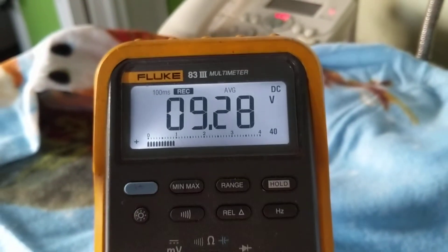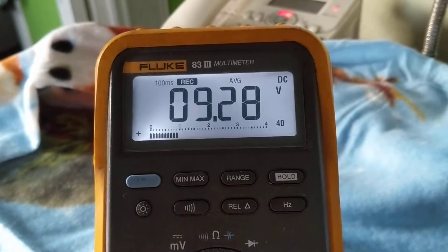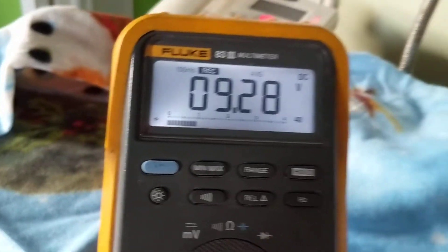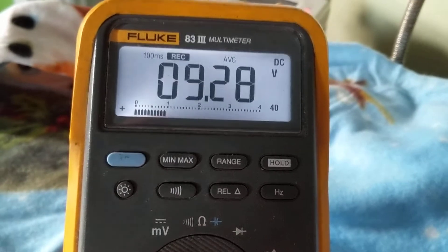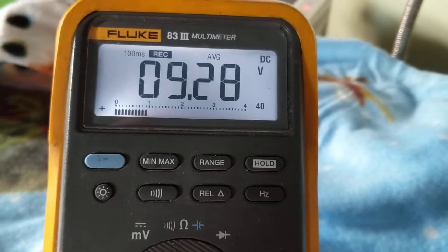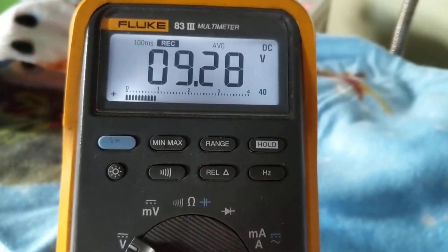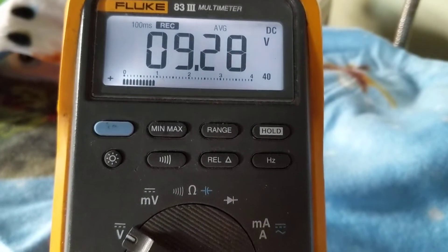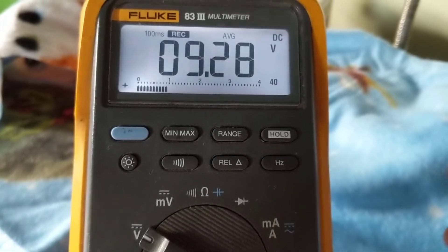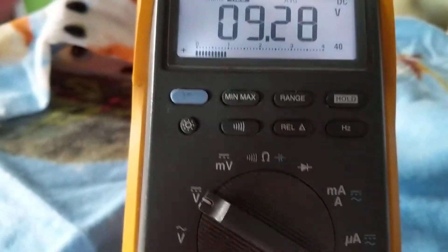So again, let's say it's going from 9.3, 9.2, 9.1, you can select it for average and it'll give you the average value so it doesn't drive you crazy figuring out where it goes when it fluctuates up and down in values. That's why I like this type of meter.